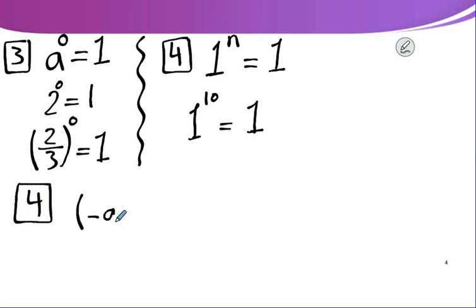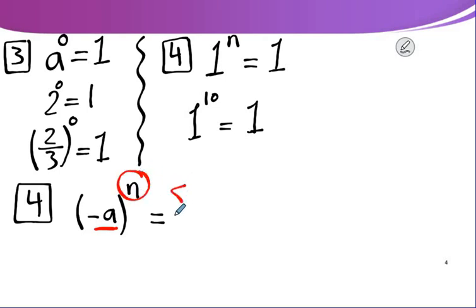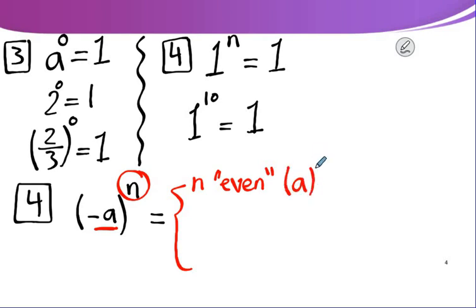Also, negative A to the power 0 equals 1. If the base is negative, look at the power — we have two cases. If the power is even, it will be A to the power n (the result is positive).